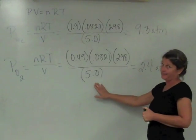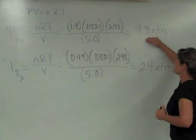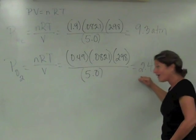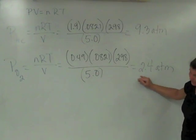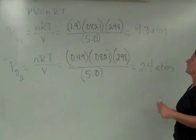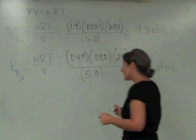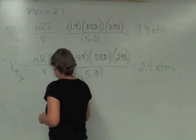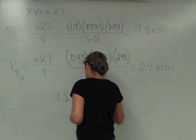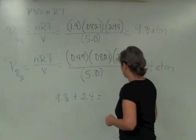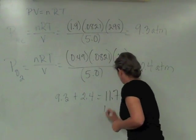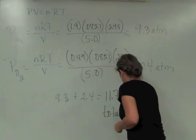The partial pressure of the oxygen is 2.4 atmospheres. And how are we going to find the total pressure? Total pressure is going to be 9.3 plus 2.4, is equal to 11.7 atmospheres total pressure.